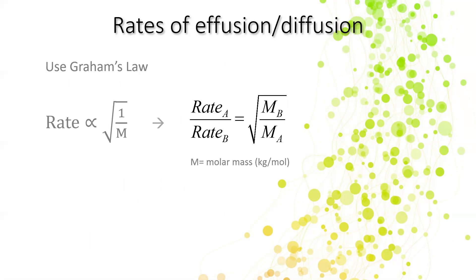Speaking of effusion and diffusion, we're going to talk about how to find those rates. When you're finding the rate, that means you're finding the amount of moles per amount of time — the amount of moles that can escape in a given amount of time. Graham's law states that the rate is proportional to 1 over the square root of the molar mass. This is expressed as: rate of gas A over rate of gas B equals the square root of the molar mass of gas B over the molar mass of gas A. Note that A is on top on the left and on the bottom on the right, and B is on the bottom on the left and on top on the right. The M here is molar mass — not just the mass of your sample. For Graham's law alone, grams per mole is fine, but if you're using the R value in another equation, use kilograms per mole.